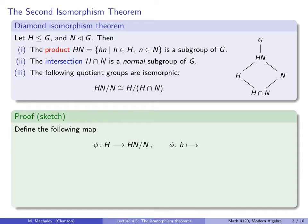Now I'll sketch the proof of the third part involving the isomorphism, because that's going to use the fundamental homomorphism theorem. First, a few words about the proofs of the first two parts. Why is the product HN — this set — a subgroup of G? To prove that, we need to verify the three properties of being a group: that it contains the identity, that it's closed, and that inverses exist. The identity is in H and in N, so it's clearly in this set because we can write it as the identity times the identity.